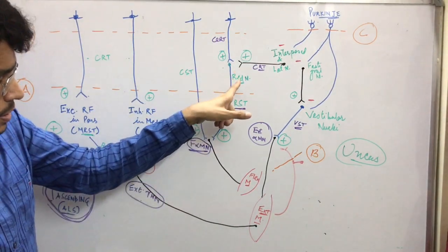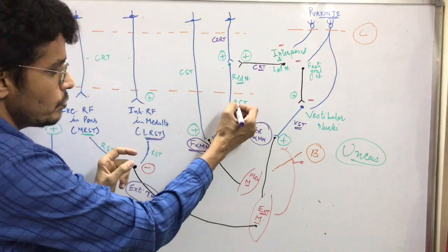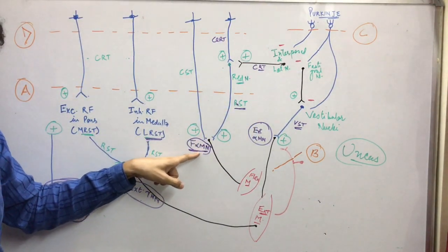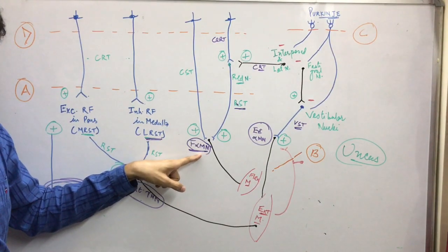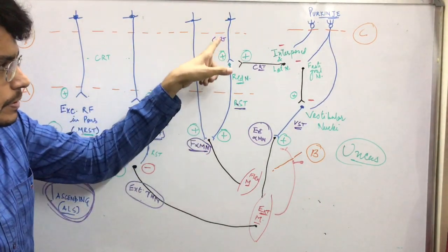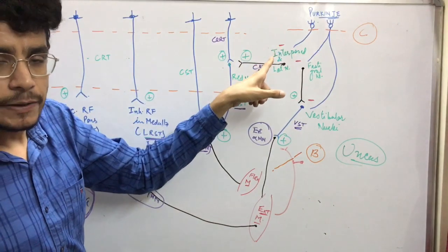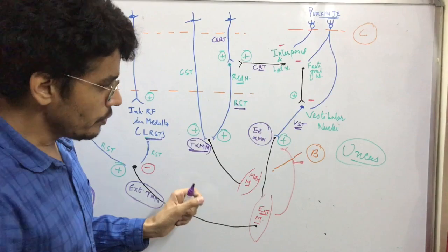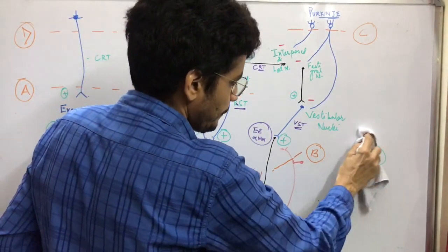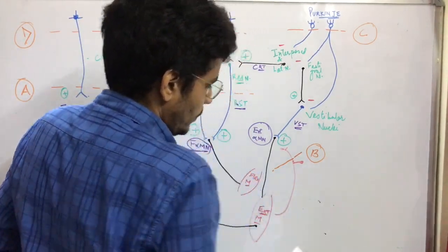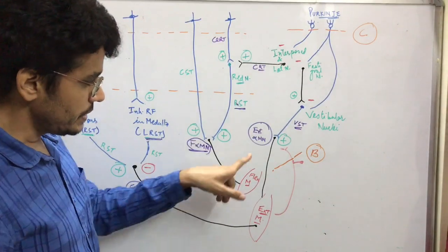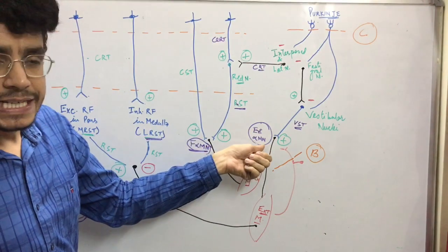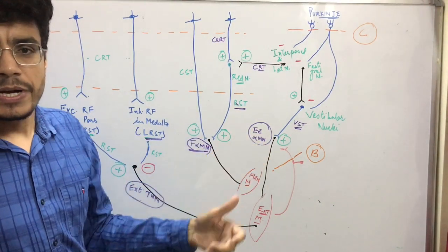So the rubrospinal tract is stimulatory to flexor alpha motor neurons, and it has control from the cerebral cortex and from the cerebellum. Now coming to the third one — the vestibulospinal tract. The vestibulospinal tract has connection with extensor alpha motor neurons. It is stimulatory to the extensor alpha motor neuron to maintain posture and maintain equilibrium.